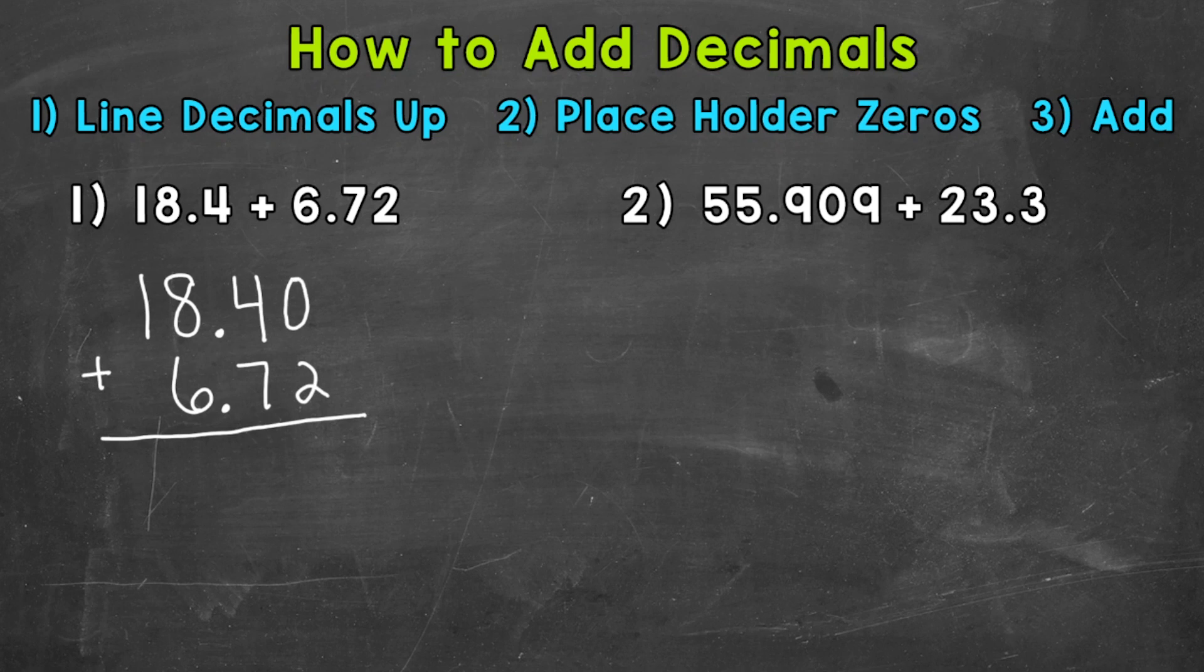Remember, zeros to the right of a decimal do not change the value. That's an equivalent decimal, so we are able to do that. We're not changing the value of the problem. Once we have that, we add.